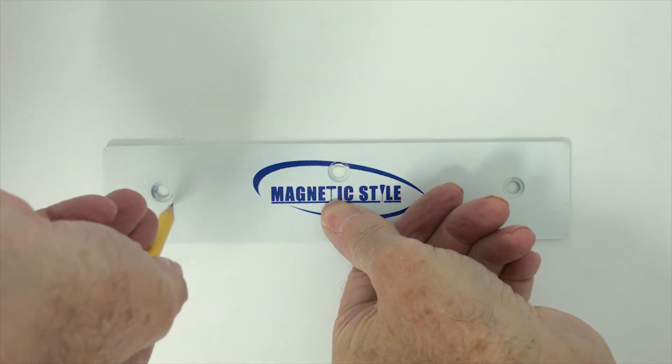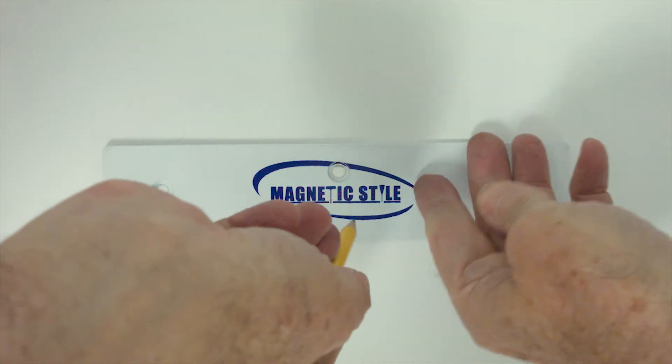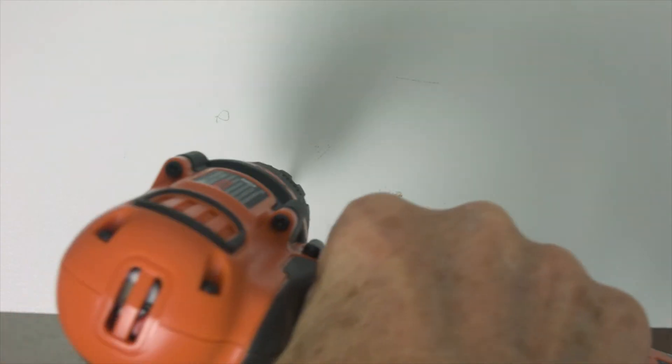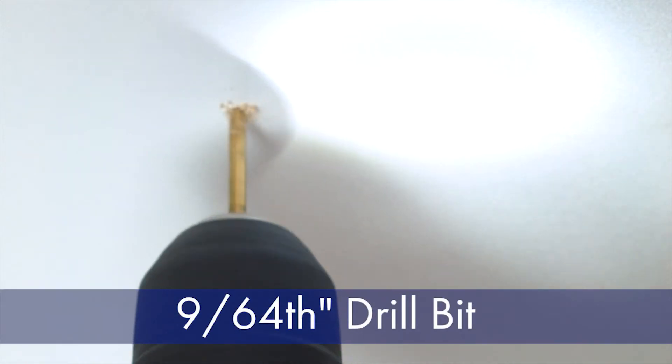Place the mount where you want to attach it and mark the mounting holes. After you mark your placement, drill a three quarter inch deep pilot hole using a 9/64th inch drill bit.